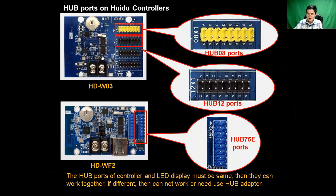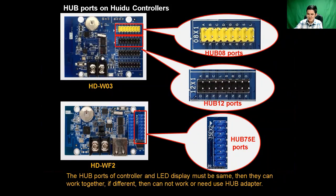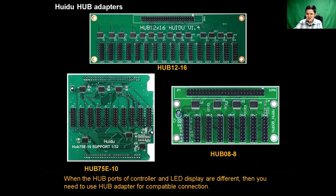Let's continue to check our other Huidu controllers. Now you can see the W03 — this is our Huidu single-color Wi-Fi controller. It has one group of HUB8 ports (you can see the yellow ports) and three groups of HUB12 ports (you can see the black ports). And the next model is WF2, which is our full-color Huidu controller. This controller has two groups of HUB75E ports — you can see the blue ports.